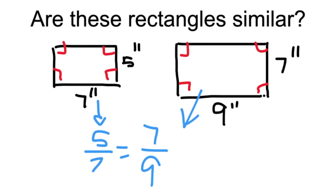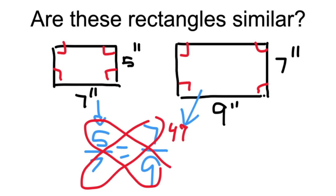One way to check is to cross multiply. Seven times seven is forty-nine. Five times nine is forty-five. Since these are different, the ratios are not equal and these rectangles are not similar.